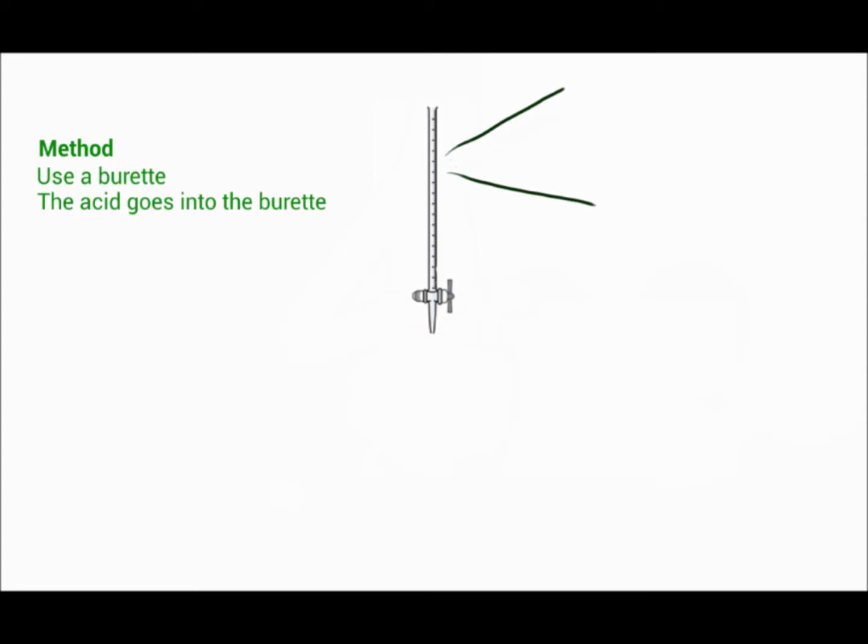Take a burette and fill it with acid. To increase the accuracy of your measurement, read directly from the bottom of the meniscus, as shown here.